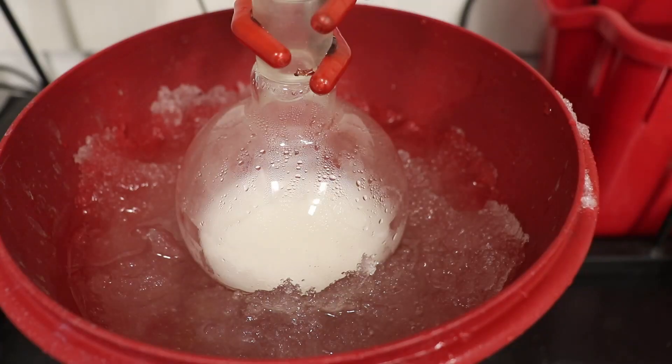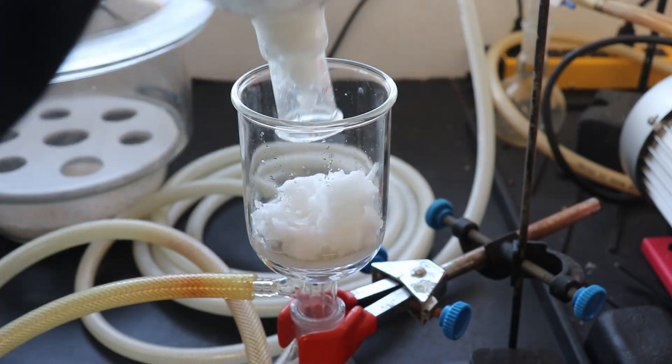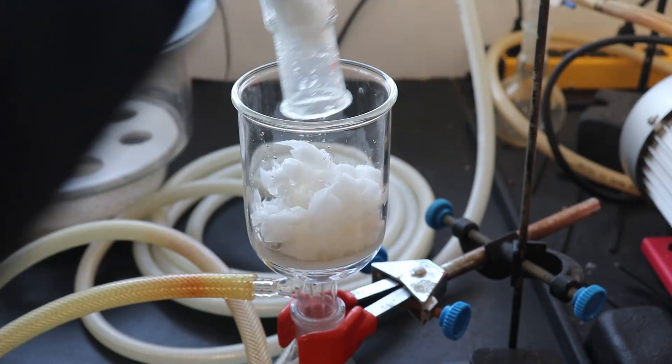The flask was then cooled on ice, broken up, and filtered off, washing with two 30ml portions of anhydrous diethyl ether.